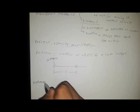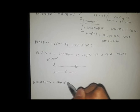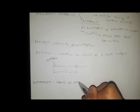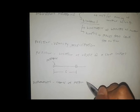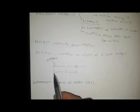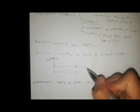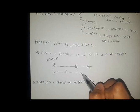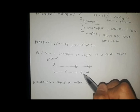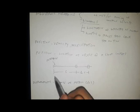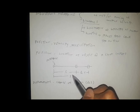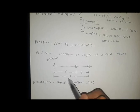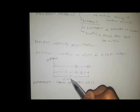In connection with position, we have displacement. Displacement refers to the change in position, denoted by Δs. If your initial position is s with respect to the reference and the object moves to a new position s-prime, then that change in position Δs is your displacement.